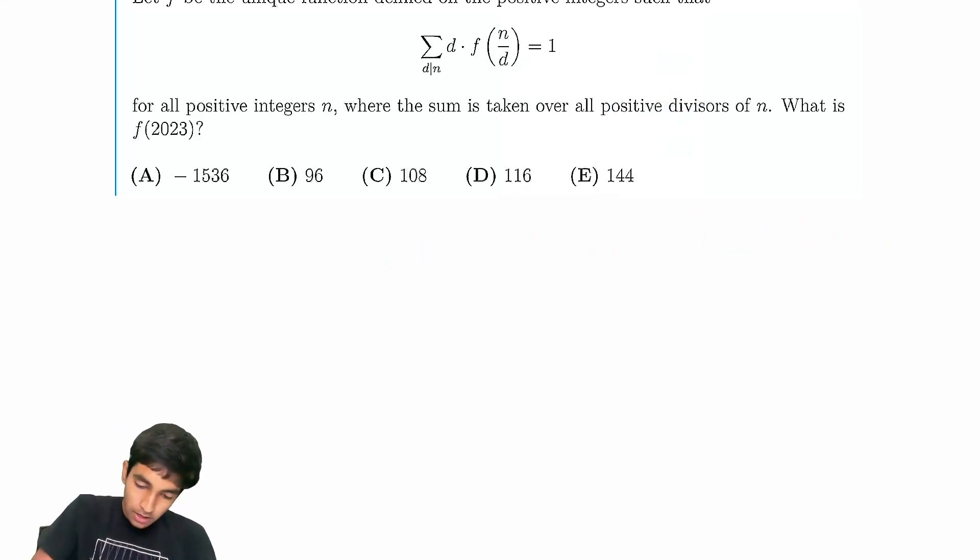So the first thing you might notice is that if you write out for 2023, now there is one way to do this with just complete brute force, and you can be like, okay, 1 times f of 2023 plus a bunch of other terms equals 1. And then you can just directly find each of those terms here by just using the same kind of equation again. And then you can keep going down and down and down. But this is a little bit tedious. So maybe can we find a little bit smarter way to do this?